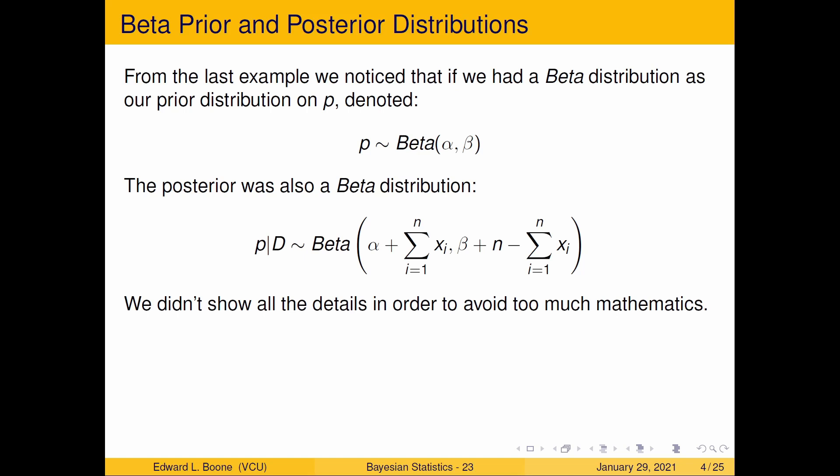The probability distribution for p given the data—this little tilde symbol here means distributed as—p is distributed as beta alpha beta. P given the data, so this is the posterior, is distributed as beta, and then we have alpha plus the sum of the xi, beta plus n minus the sum of the xi.